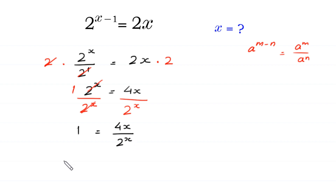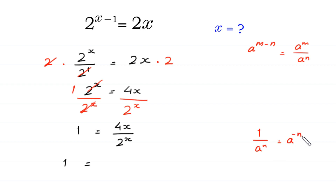Next, 1 is equal to — according to this property of exponents, 1 over a to the power n is equal to a to the power negative n — we can write 4x over 2 to the power x as 4x times 2 to the power negative x.